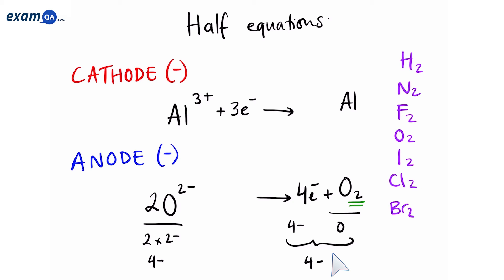Remember, the goal is to make sure both sides have the same charge and not to try and make both sides equal to zero. So, four minus and four minus are balanced. And these are the two half equations for this particular reaction.